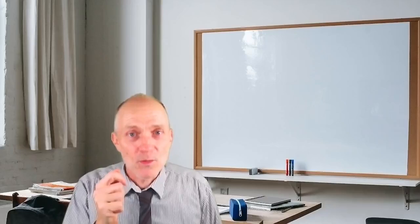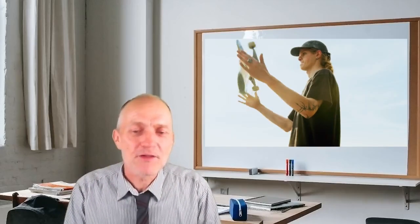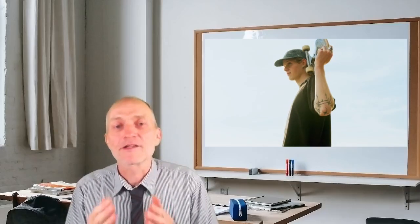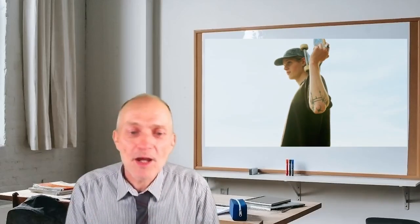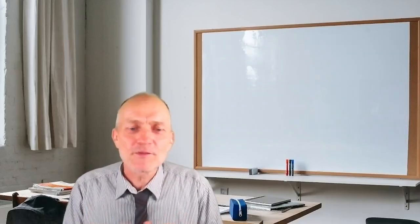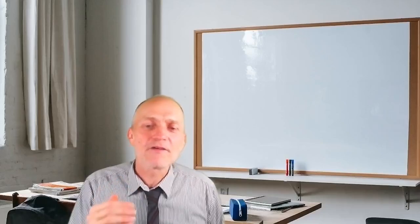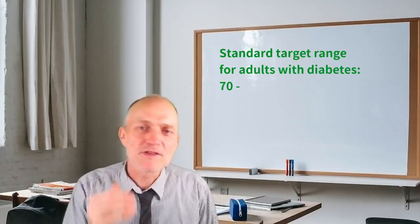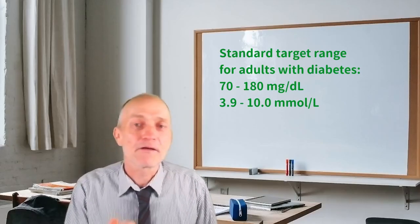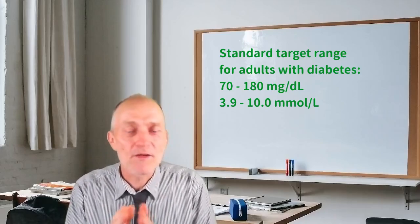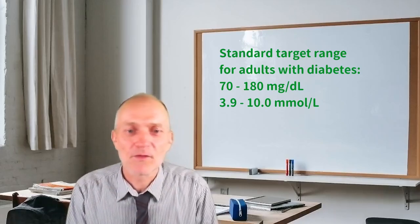Let's start with what you will know. If you have diabetes, you will know what your specific target range is. If you do not, you really should ask your medical team as soon as possible. For adults with diabetes, the standard recommended target range is between 70 and 180 mg per deciliter, that is between 3.9 and 10 millimoles per liter.